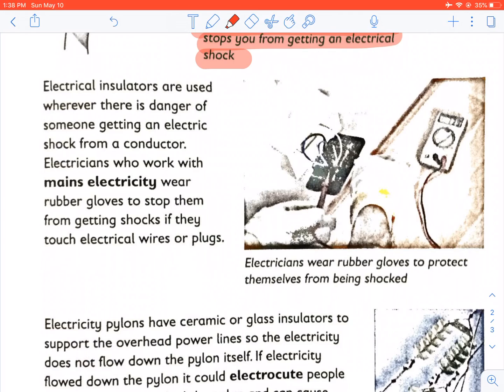Electrical insulators are used wherever there is a danger of someone getting an electric shock from a conductor. Electricians who work with mains electricity wear rubber gloves to stop them from getting shocks if they touch electrical wires or plugs.